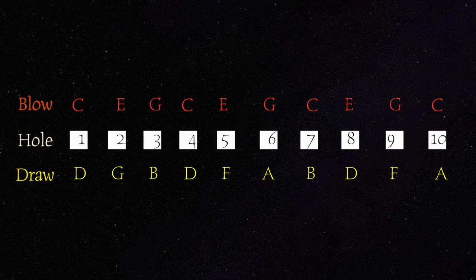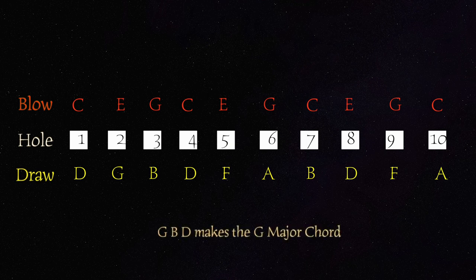And then if you move back a bit, from the 2 draw, 3 draw, 4 draw, we have a G major chord. G, B, D creates a G major chord.